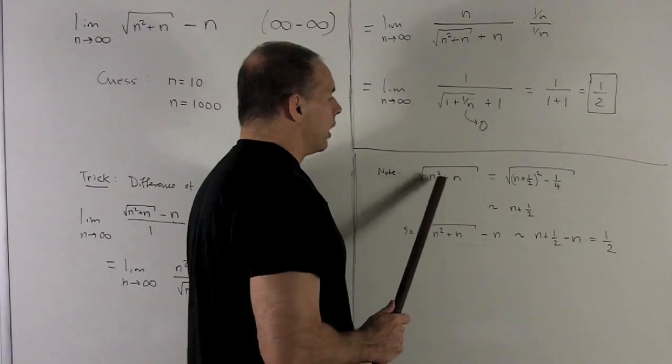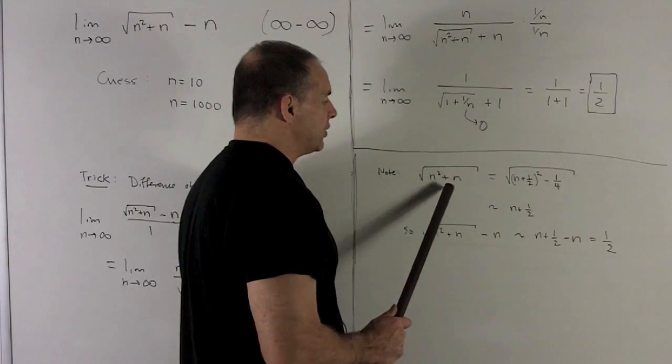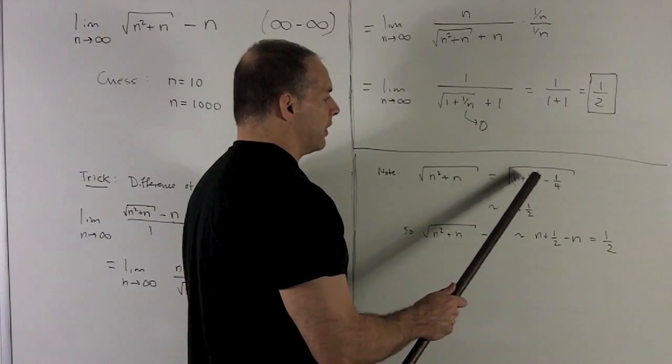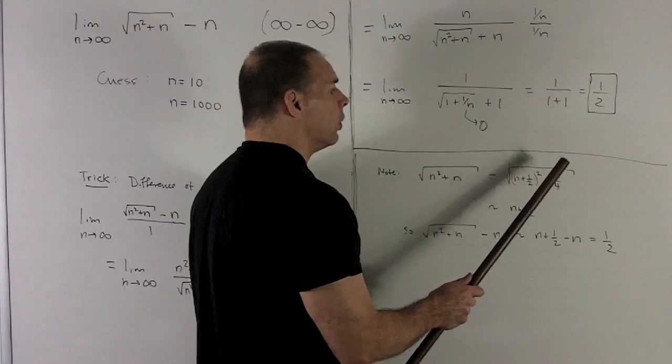So what do we do? I'm going to take whatever number is before my n. I'm going to divide it in 2. So that's going to give me a half. We're going to square n plus that. And then I'm going to subtract off that number squared. So we just subtract off 1 fourth.